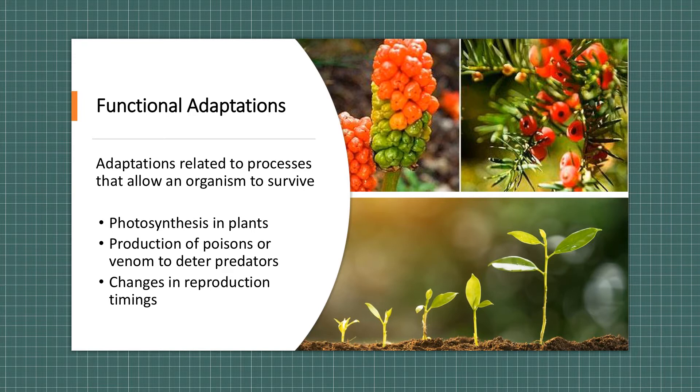For example the larch tree and many other types of plants produce berries that are poisonous to herbivores. They can also change their reproduction timings. For example, seeds can lay dormant for many years until the conditions are correct for growth.